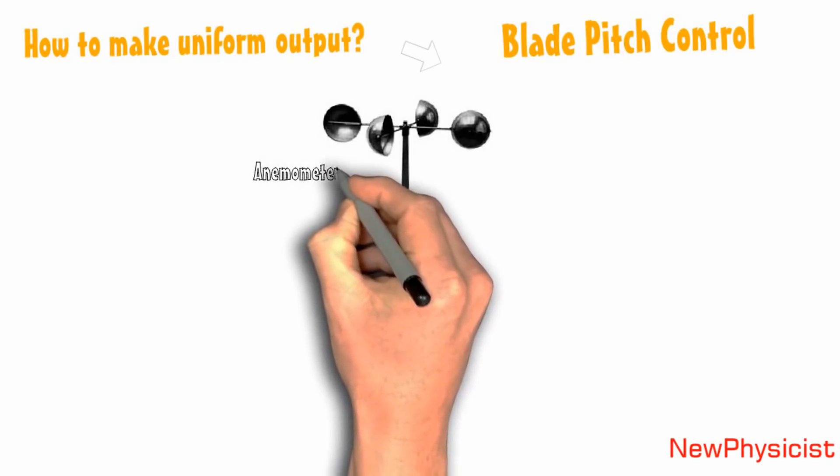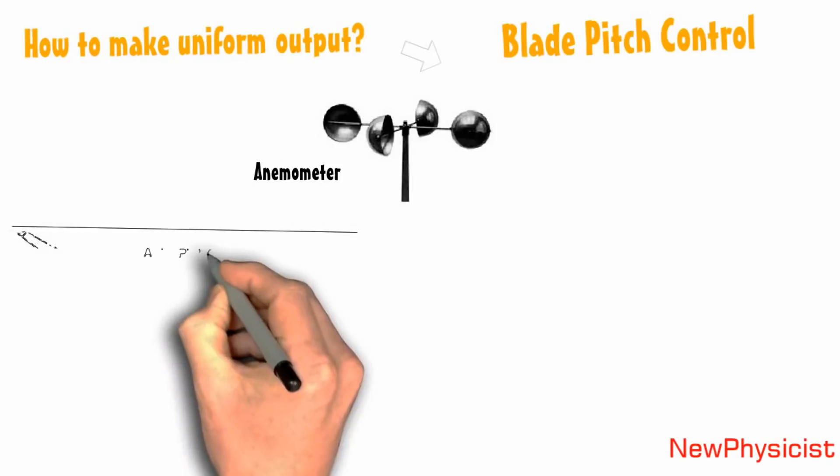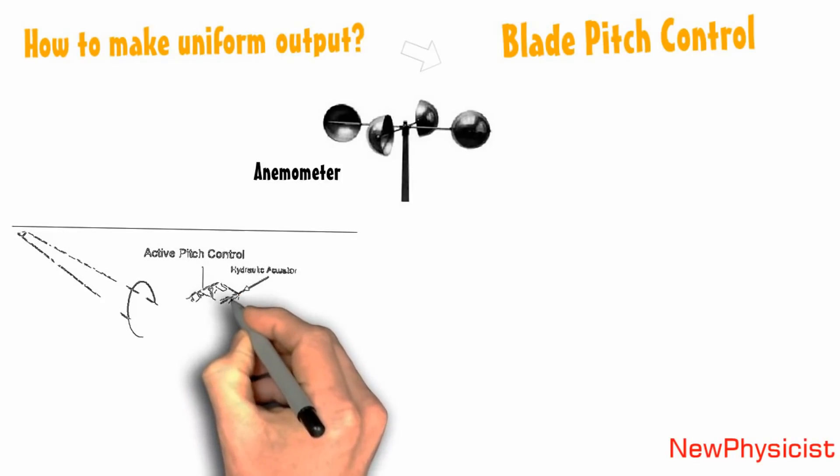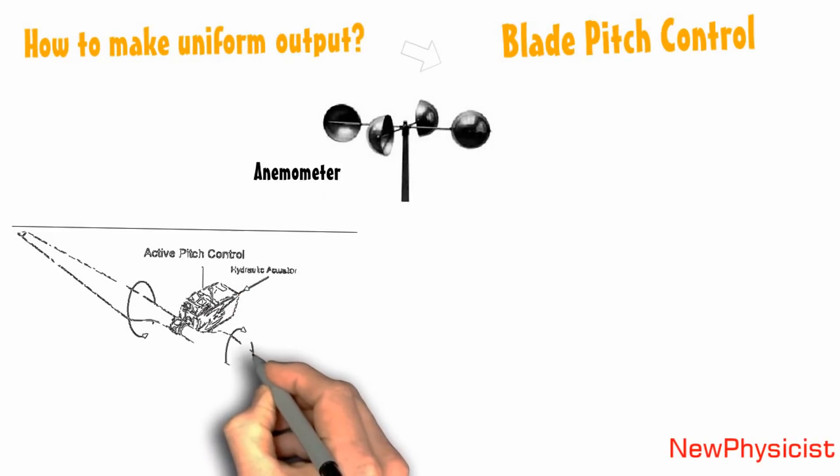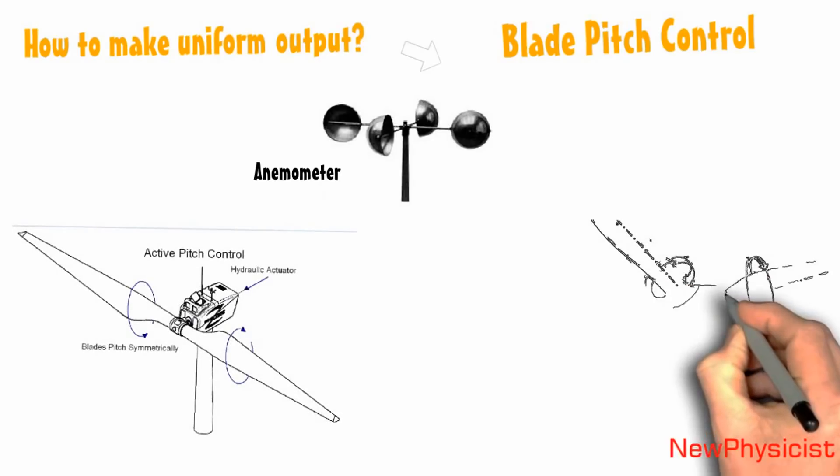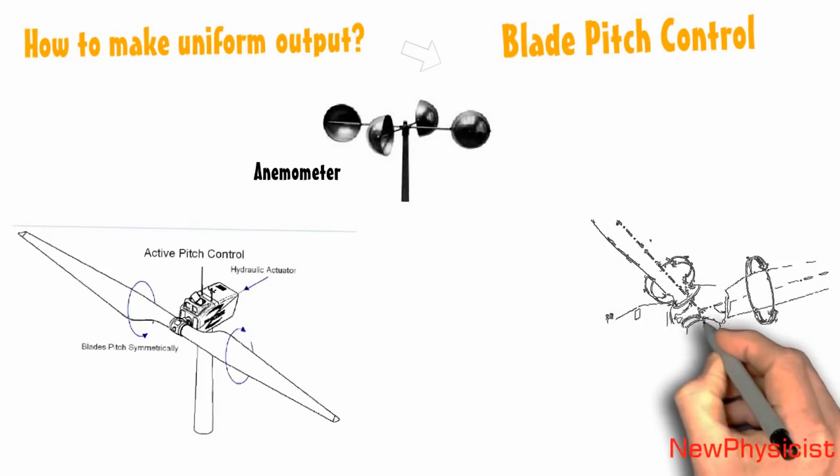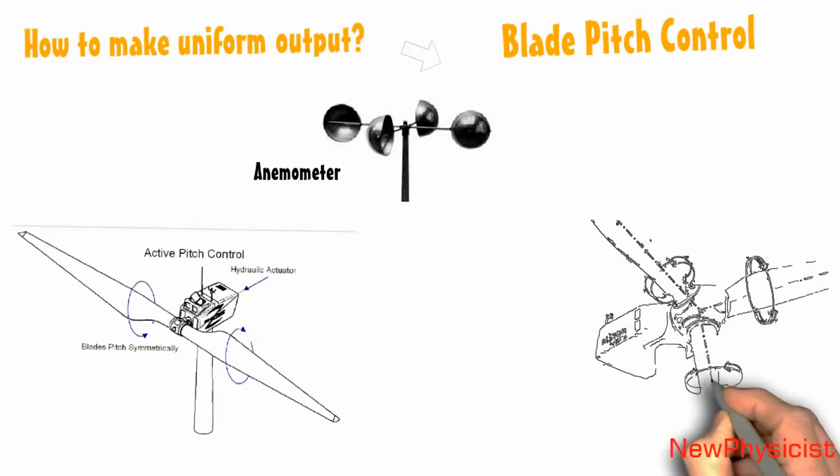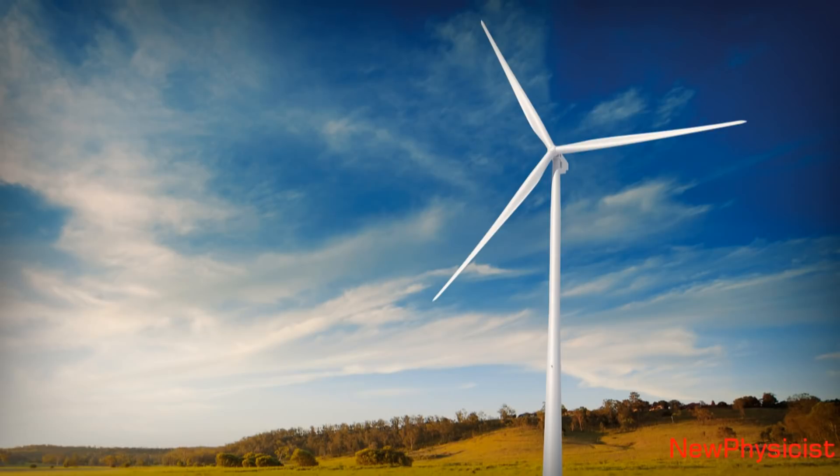When wind speed increases, the pitch control mechanism will increase the pitch, thereby reducing the propeller rotation speed. When the wind speed decreases, the pitch control mechanism will reduce the pitch, thereby increasing the rotation speed of the propeller. This is how a horizontal axis wind turbine works.